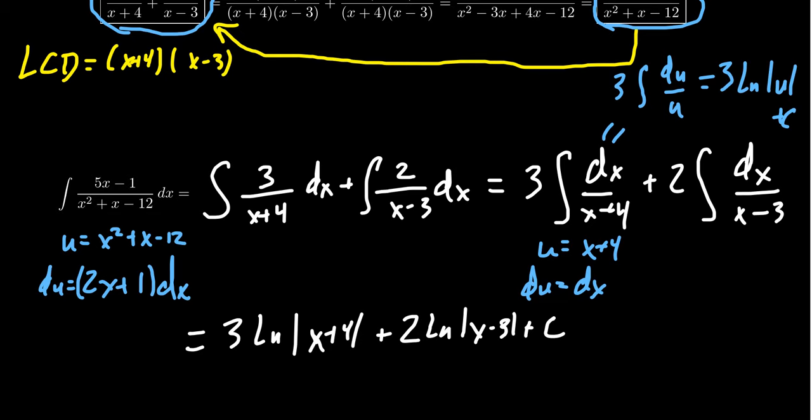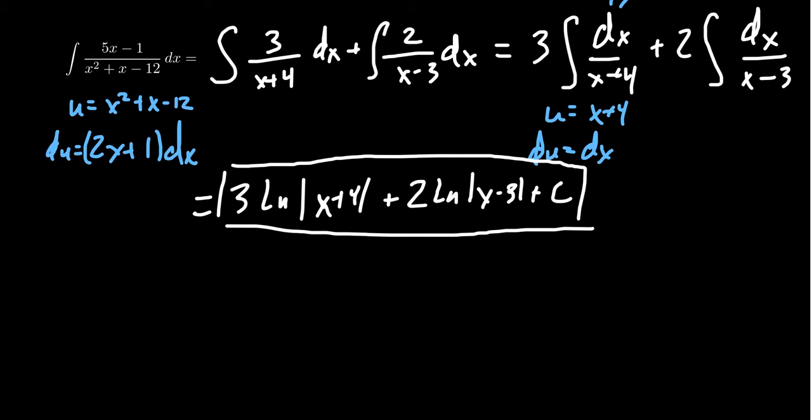This gives us a good antiderivative. Using properties of logarithms, we could rewrite it as ln|(x+4)³(x-3)²| + C. That would also be correct, though I'm perfectly happy with the first form. The logs don't need to be combined.